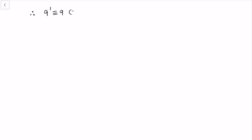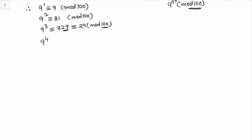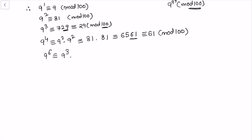Now let's compute powers of 9 modulo 100. We have 9^1 ≡ 9, 9² ≡ 81, and 9³ = 729 ≡ 29 (mod 100), since 729 − 29 = 700 is divisible by 100. Then 9^4 = 9² × 9² = 81 × 81 = 6561 ≡ 61 (mod 100). And 9^6 = 9³ × 9³ = 29 × 29 = 841 ≡ 41 (mod 100).